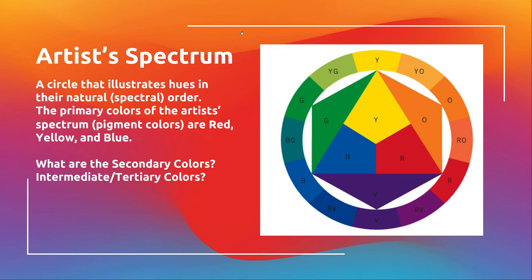Then you have complementary colors on top of that. Complementary colors are any color that's opposite on the color wheel. The main complementaries are green and red, yellow and purple, and blue and orange.